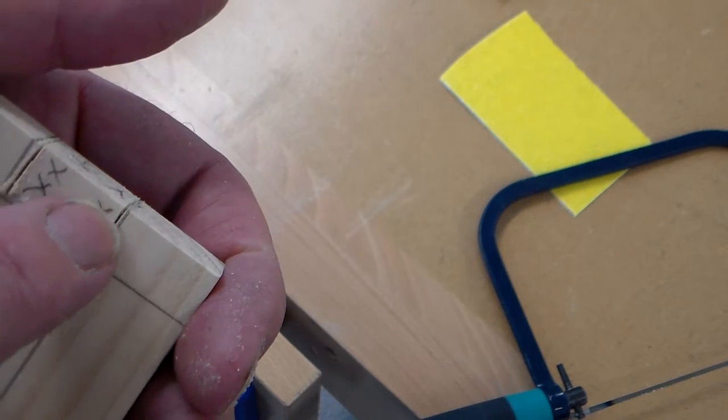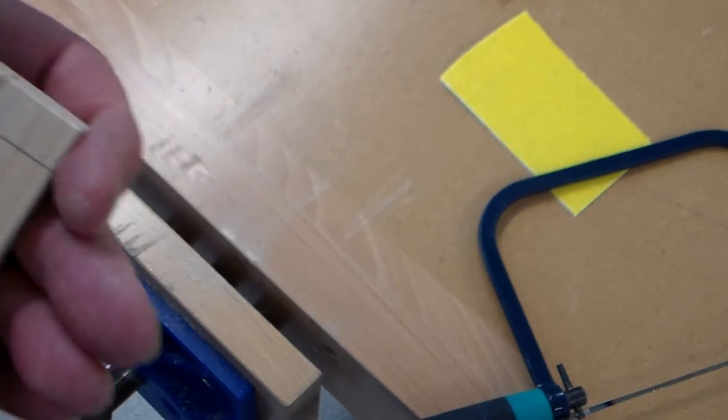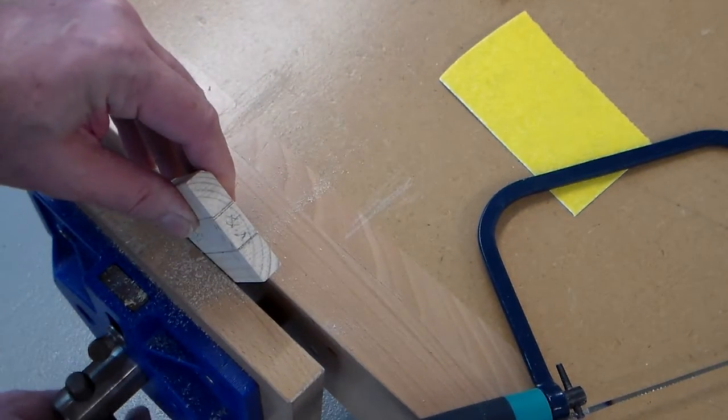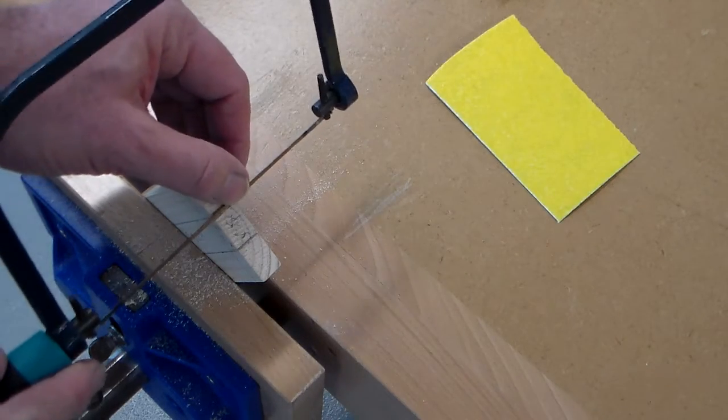Now what I'm going to do is make two diagonal cuts at 45 degrees across here. It might help here to place the wood. It's always better to cut downwards.